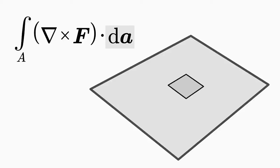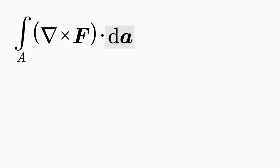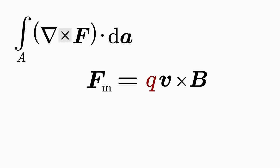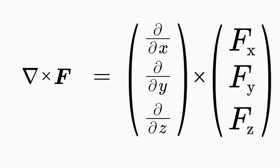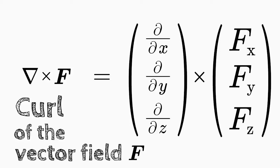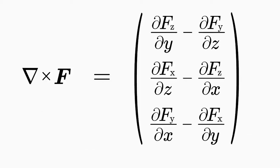dA is again an infinitesimal piece of the surface A, and at any location it is orthogonal to that surface. Here comes the cross product, which you have already met when we discussed the magnetic force. Here the cross product is formed between the nabla operator and the vector field f. This is called the curl of the vector field f. The result, in contrast to the scalar product, is again a vector field.